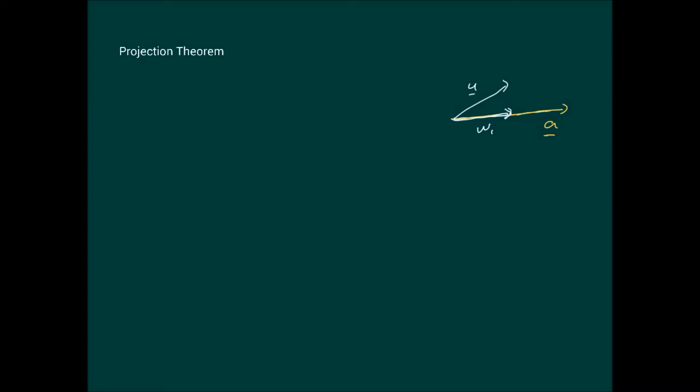What we're saying is this is a component of u along a, and the way we get it is by what's called an orthogonal projection. So this angle here, geometrically, would be a 90-degree angle. We're saying that u belongs to R2 or R3, and in this geometrical scenario, w1 is the orthogonal projection of u onto a.